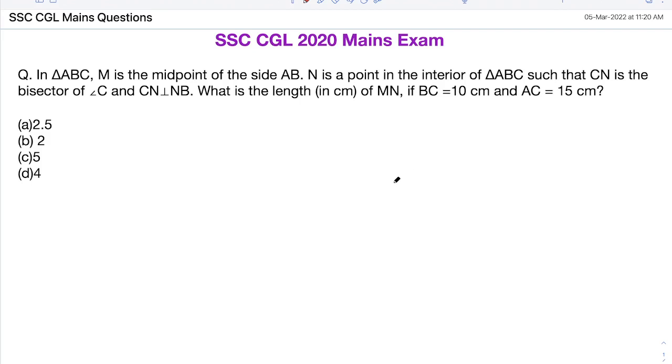Hi friends, welcome to my channel Math with Mani, and this is Manikanda Prasant Kumar. Today we are discussing a question which was asked in SSC CGL 2020 mains recently conducted in January. The question is: In triangle ABC, M is the midpoint of side AB, and N is a point in the interior of triangle ABC such that CN is the bisector of angle C and CN is perpendicular to NB. What is the length of MN if BC is 10 centimeters and AC is 15 centimeters?